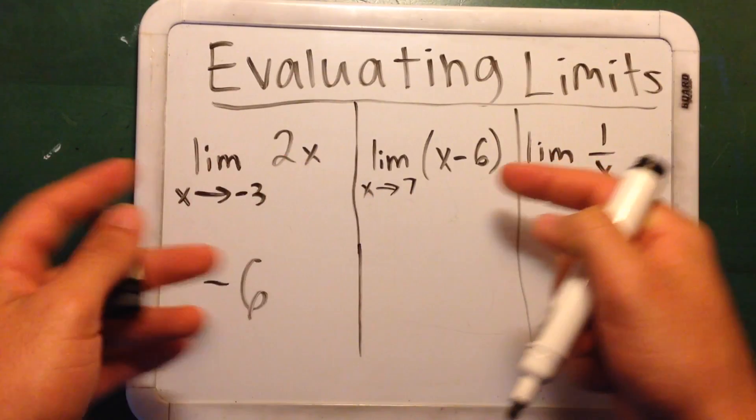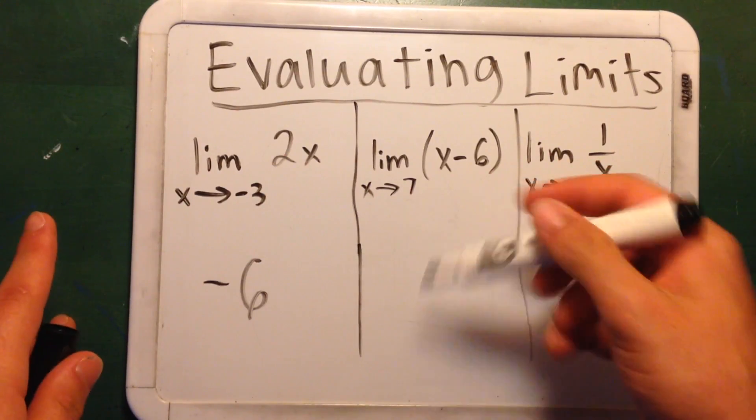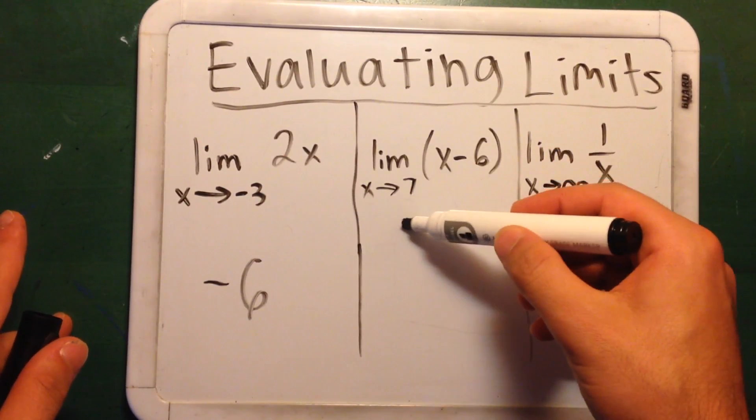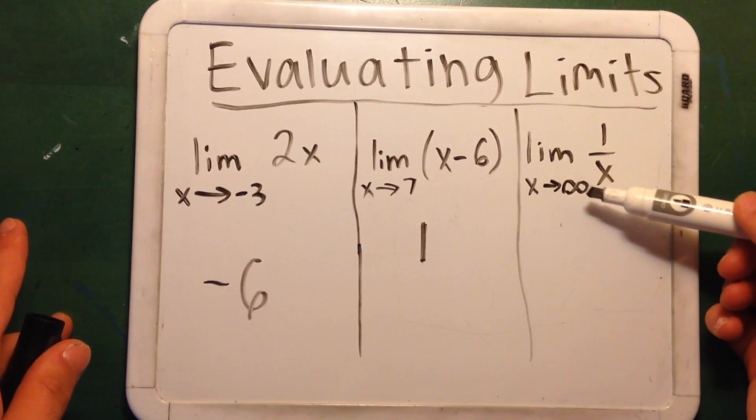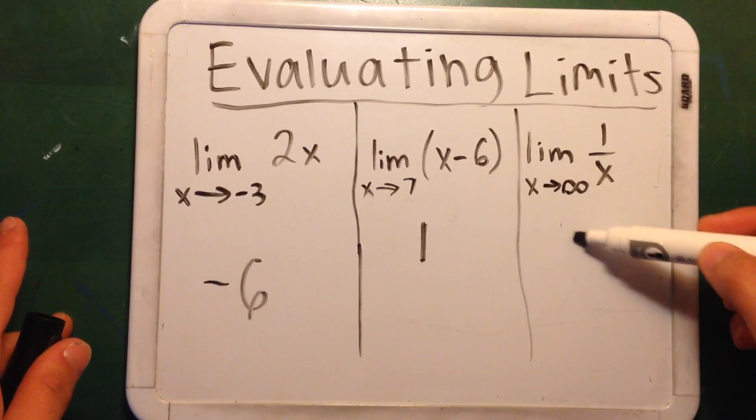Moving on to this problem right here, it's the same thing as x approaches 7. Put in 7 here for x and you would get 1. And then right here as x approaches infinity, x on the bottom is going to be 0.